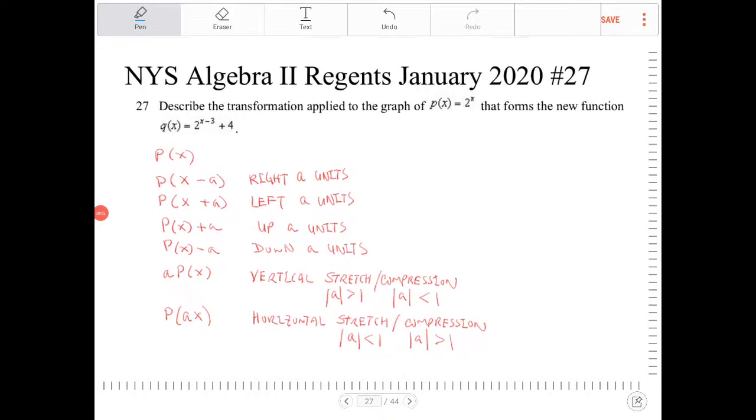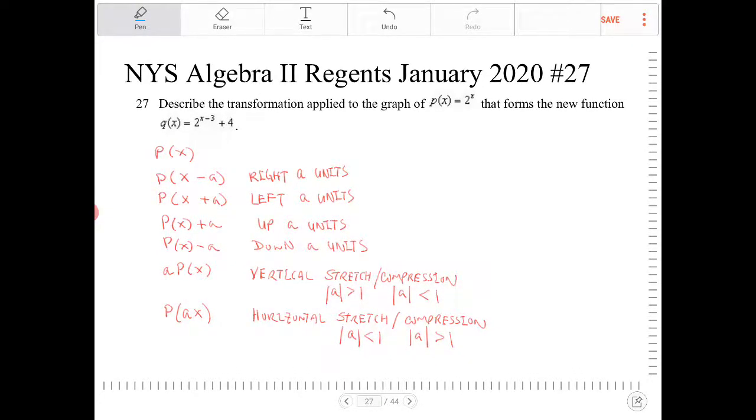Describe the transformation applied to the graph of p(x) = 2^x that forms the new function q(x) = 2^(x-3) + 4.